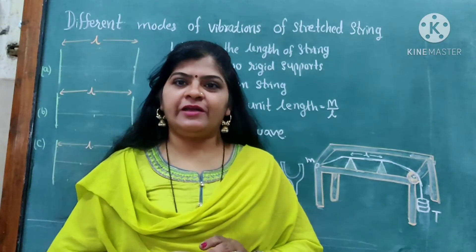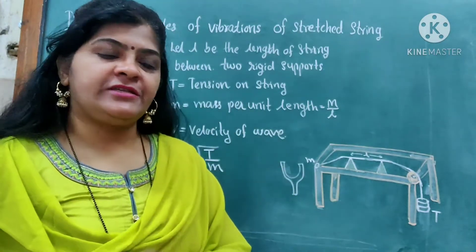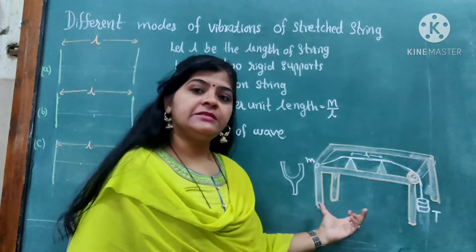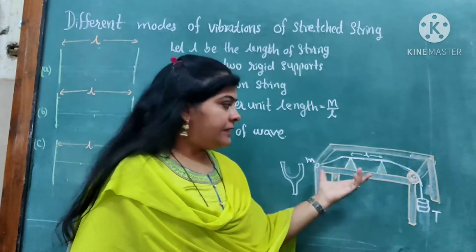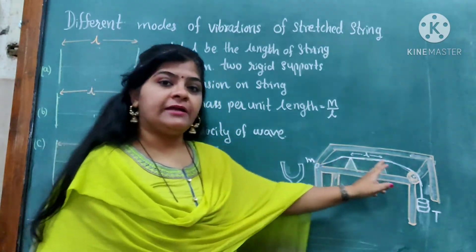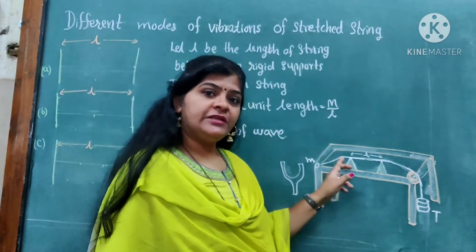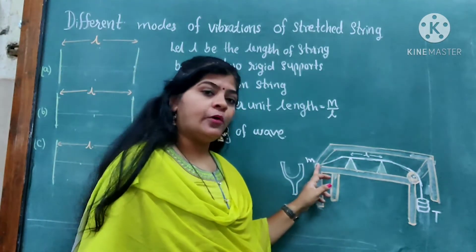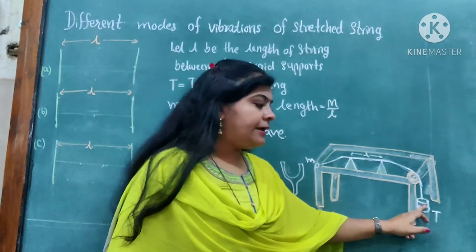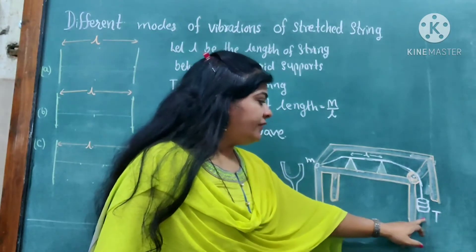Good morning students. Today we are having the vibration of stray strain. Now here see that the one apparatus is there, this is called as a sonometer. In this sonometer experience, there is one wire attached. One thin uniform meter wire is used which is attached at one point, and the other end passes over the pulley, and at the end of it we attach the slotted weights.